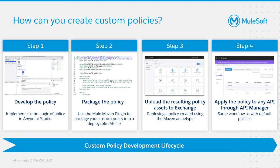But what should you do if you can't find a policy to solve your problem? In that case, you could develop your own custom policy in four general steps. First, you will need to set up a project in Anypoint Studio with the required files. The easiest way to set up all required files is by using the Maven archetype. After setting up the project, you can update the logic as necessary with your requirements. Step two is to package your policy. You can use the MuleMaven plugin to package your custom policy into a deployable jar file that you can later apply to an API.